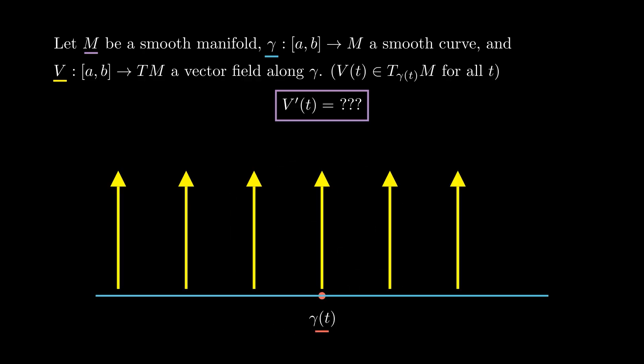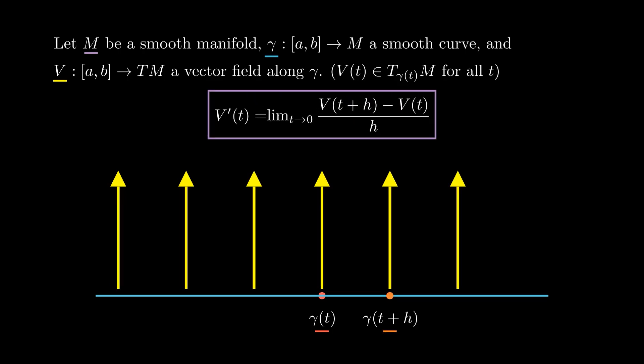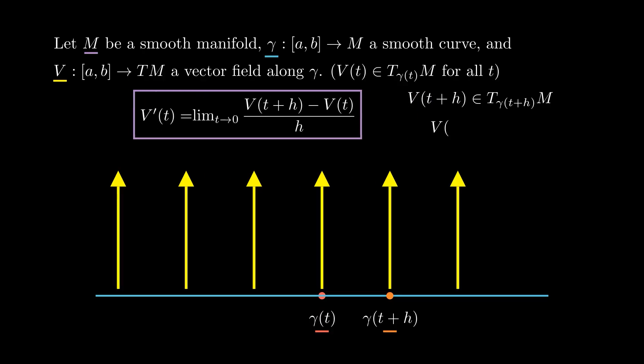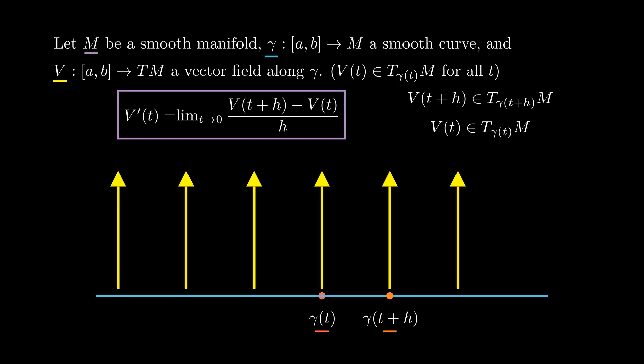What I would like to do is take V(t+h) minus V(t) and divide over h — this is how we take derivatives. Now there is a big problem with this: V at t+h is a vector in the tangent space T_{gamma(t+h)}M, and V at t is a vector in T_{gamma(t)}M. These are two different vector spaces, so it doesn't make sense to take the difference between these two vectors. To properly do this we need to connect these two vector spaces, and that is done with a connection.